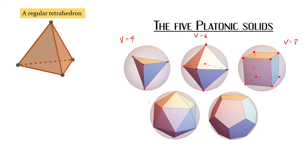Let's think about edges. How many edges do we have in a regular tetrahedron? As you can see here: one, two, three, four, five, six — so the number of edges is six. And the number of faces is four, because it's a tetrahedron.